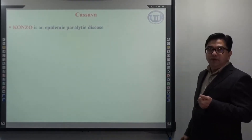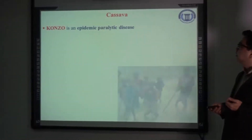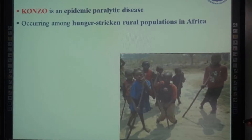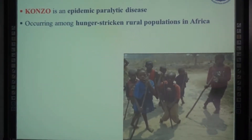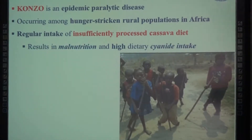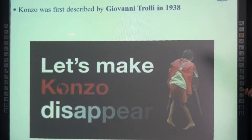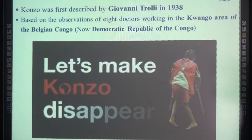Konzo is one of the most famous diseases associated with cassava — an epidemic paralytic disease occurring mainly among hunger-stricken rural populations in Africa due to regular intake of insufficiently processed cassava. It results in malnutrition and can cause rupture of the epithelial cell membrane of the proximal tubule of the nephron. The legs are more affected than the arms, and unfortunately the disability is permanent. Konzo was first described in 1930 by a doctor named Giovanni Trolli, based on observations of patients in the Belgian Congo, now known as the Democratic Republic of the Congo.